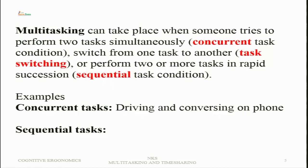Multitasking can take place when someone tries to perform two tasks simultaneously (concurrently), or switch from one task to the other (task switching), or perform two or more tasks in rapid succession (sequential task condition). All three can be found in general life. For example, driving and conversing on the phone. In project management, there will be different stages — formulation, data collection, analysis, writing — and the project manager may be shifting between these stages. Most often, tasks may involve task switching, and several tasks may be carried out together.